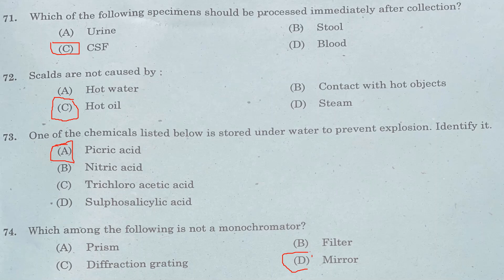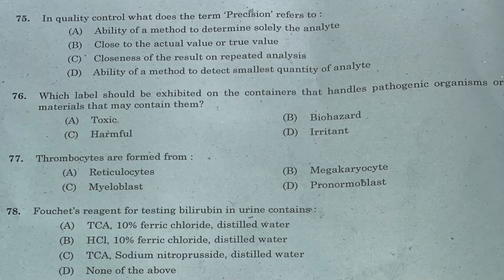Question 75: In quality control, what does the term precision refer to? Option A: ability of a method to determine solely the analyte. Option B: closeness to the actual or true value. Option C: closeness of the results on repeated analysis. Option D: ability of a method to detect the smallest quantity of analyte. Answer is Option C, closeness of the results on repeated analysis.